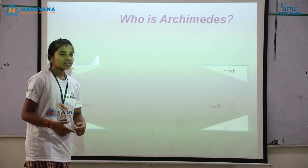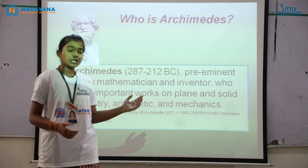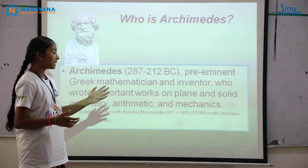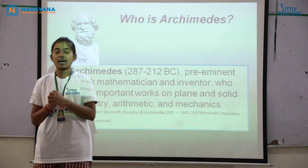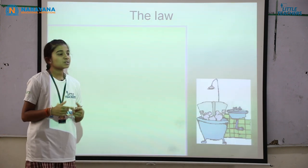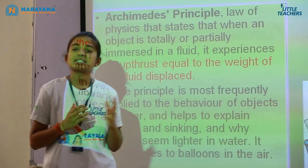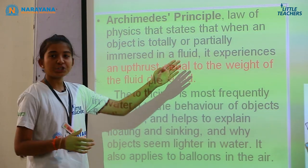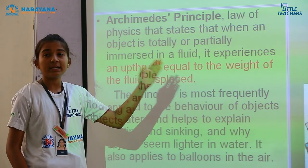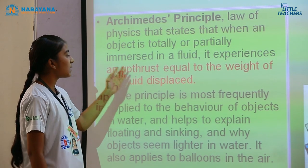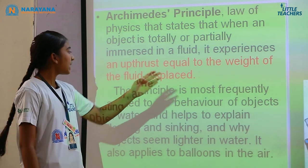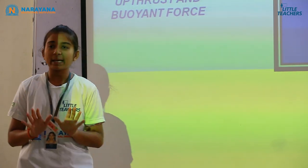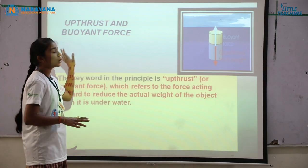Archimedes is a Greek mathematician and inventor who invented this law — Archimedes principle. Archimedes principle states that when an object is totally or partially immersed in a fluid, it experiences an upthrust equal to the weight of the fluid displaced. Now let me explain upthrust or buoyant force.